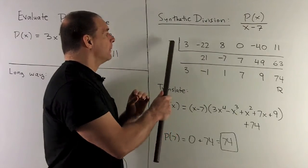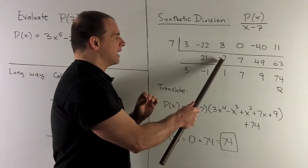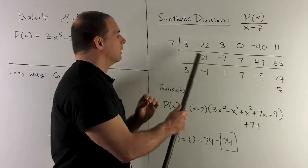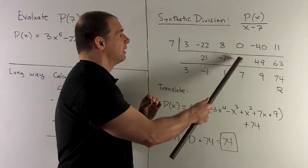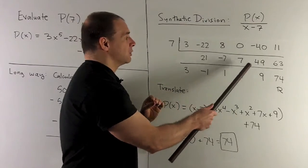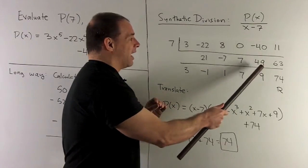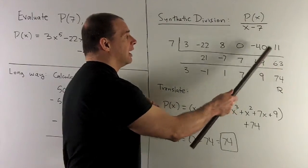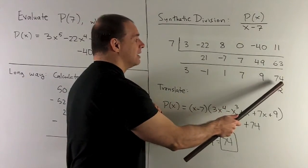Next one, 7 times minus 1 gives me a minus 7. We add down, that gives me a 1. 7 times 1 is 7. We add down, I get a 7. 7 times 7 gives me 49. We add down, I get a 9. 7 times 9 is 63. I add down, and then I get 74.